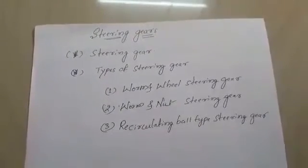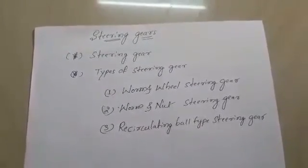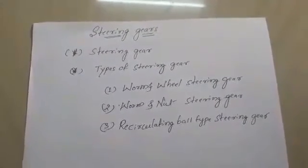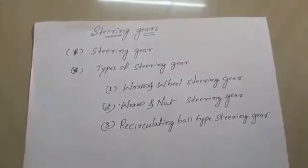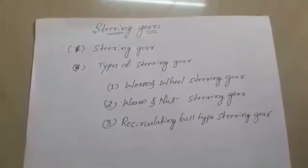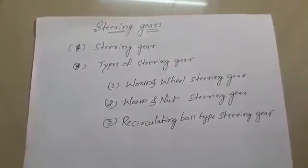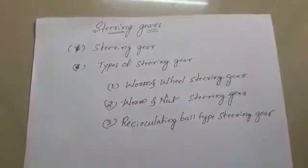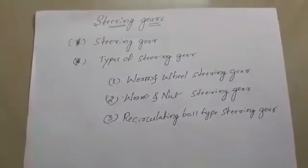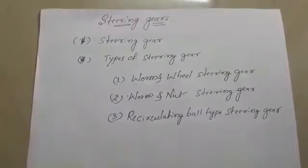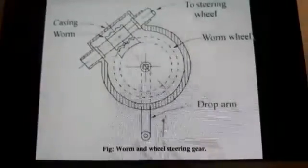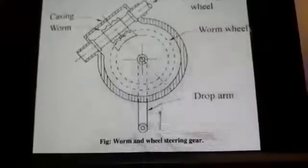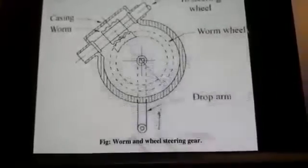The important steering gears are worm and wheel steering gear, worm and nut steering gear, and recirculating ball type steering gear. Next, we will look at how the worm and wheel steering gear works.